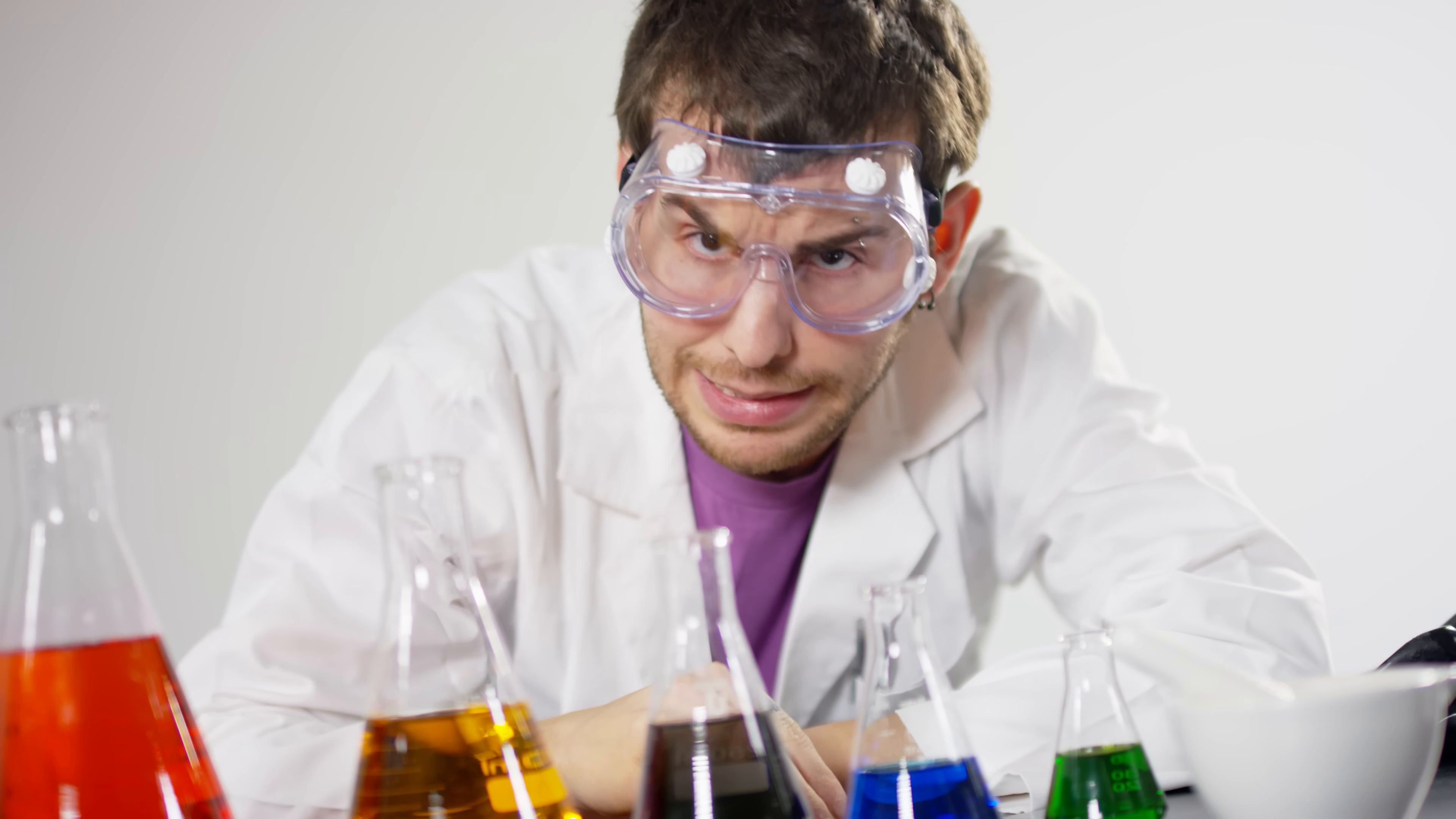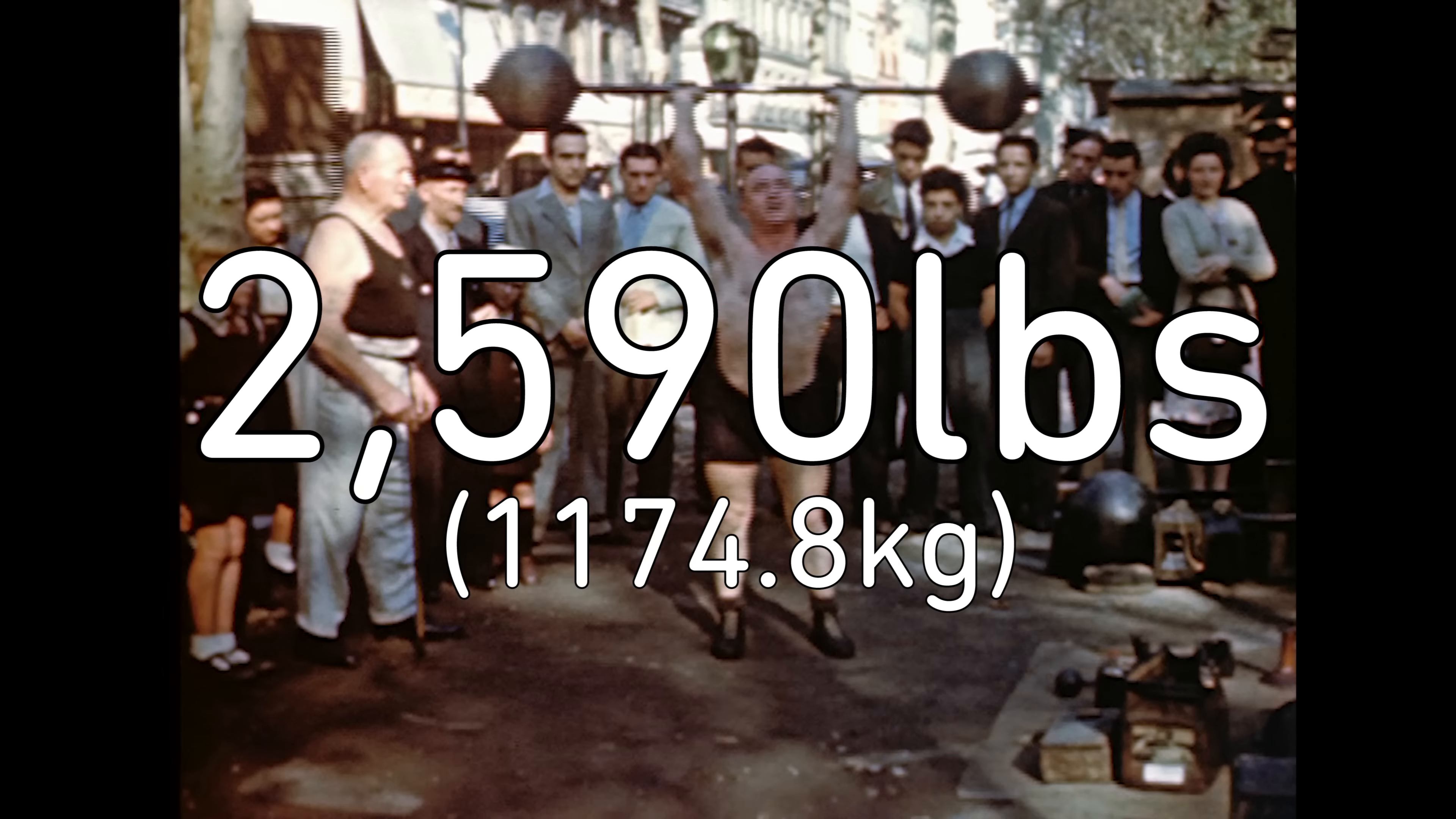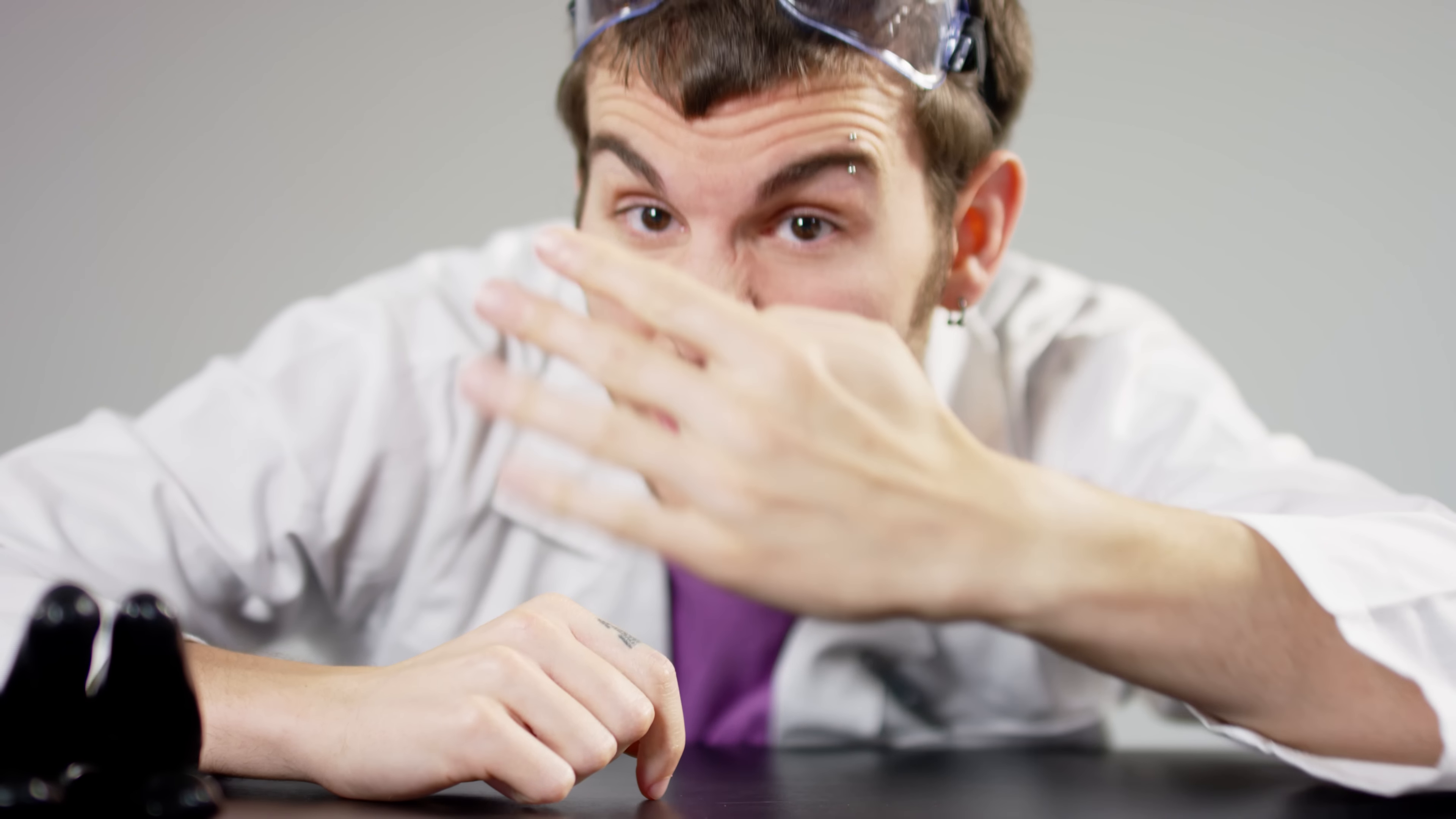But at least you'd be stronger, right? Well, yes and no. Your absolute strength would increase by a factor of 16. Meaning you'd be able to bench 14 NSHs or one cow. But because of the square cube law, your strength to weight ratio has actually gone down four times. So while your strength would be impressive, it wouldn't be as strong as you'd expect.